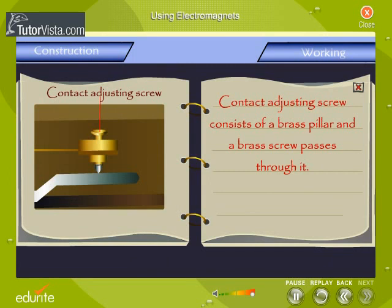Contact adjusting screw consists of a brass pillar and a brass screw.